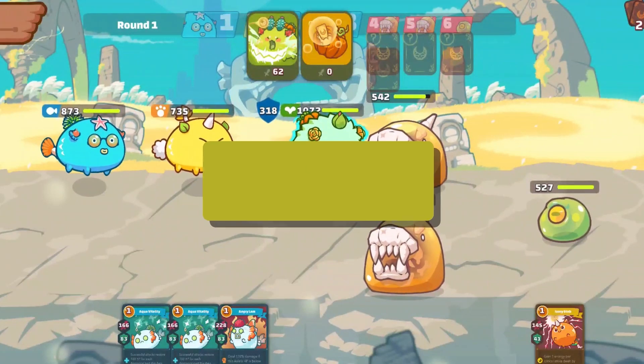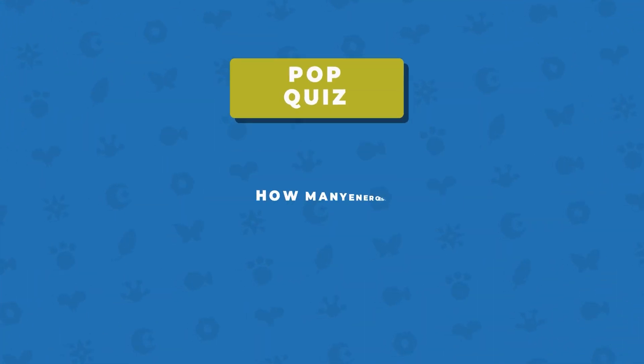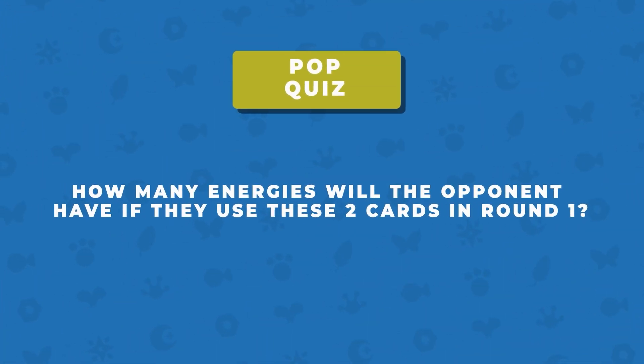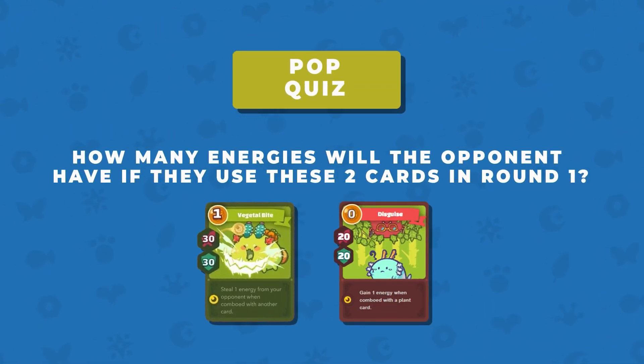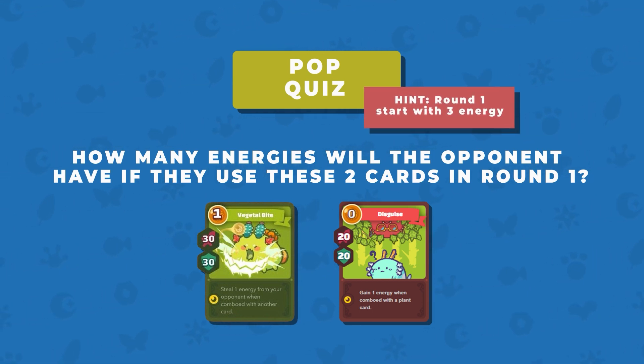Here's a pop quiz before we end the episode. How many energies will the opponent have if they use these 2 cards in round 1? Remember, round 1 starts with 3 energies.